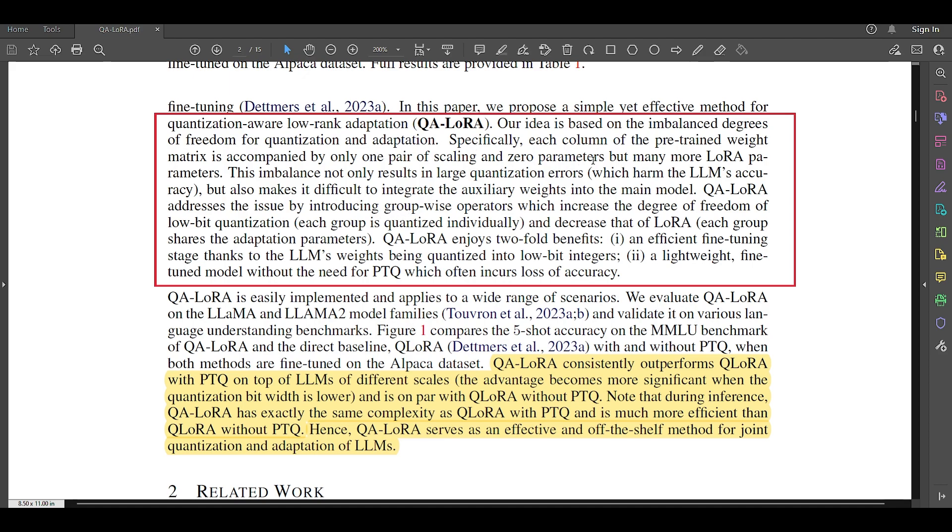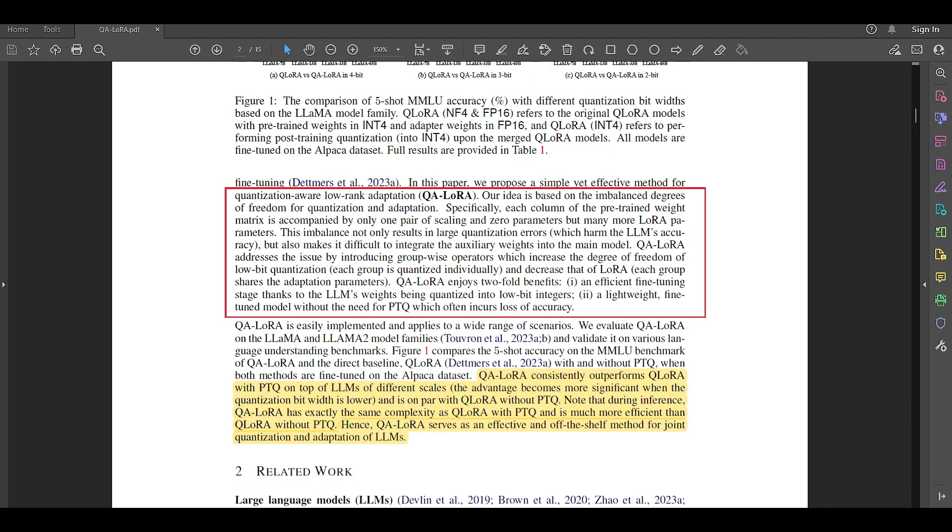Specifically, each column of the pre-trained weight matrix is accompanied by only one pair of scaling and zero parameters, but many more LoRA parameters. This imbalance not only results in large quantization errors, which harm the LLM's accuracy, but also makes it difficult to integrate the auxiliary weights into the main model. QA-LoRA addresses the issues by introducing group-wise operators, which increase the degrees of freedom of low-bit quantization. That is, each group is quantized individually and decreases that of LoRA.